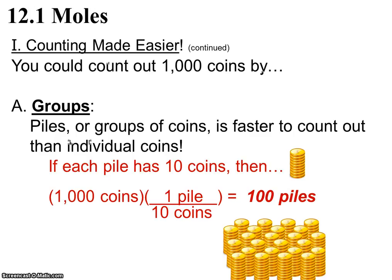And if you had piles of 10, knowing your math, you can get 1,000 coins, and then you could say, well, if each one pile has 10 coins, then my coins will cancel mathematically, and you will only need 100 piles. So that would be easy.